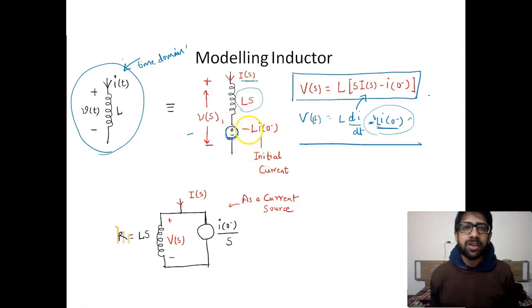At the same time, if you want to convert this into a current source by transformation of sources, you can just divide this particular voltage source by this resistance and get the value of this particular current source. The value of resistance will be the same, Ls.